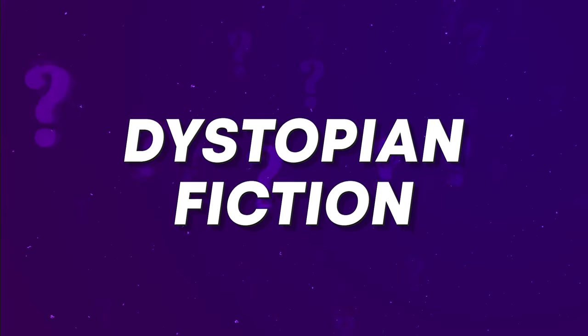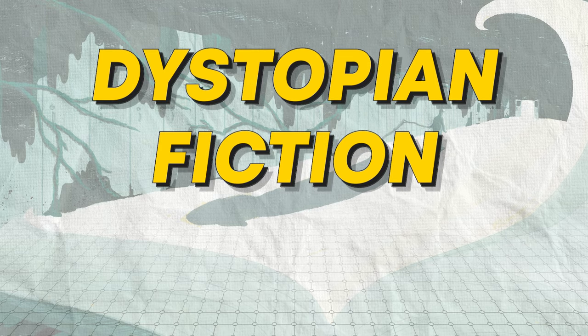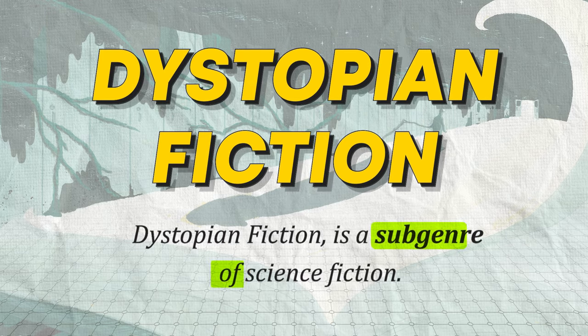Let's now talk about dystopian fiction. Dystopian fiction, just like utopian fiction, is a sub-genre of science fiction. These fictions revolve around political and social structures, imagining what could happen if everything — politics, social life, and more — were to go wrong.